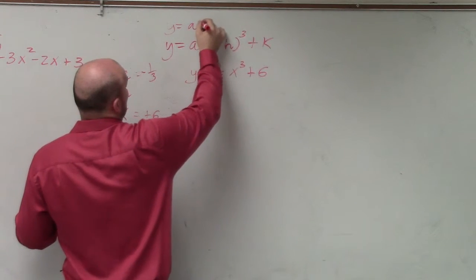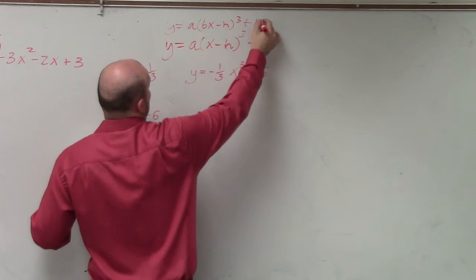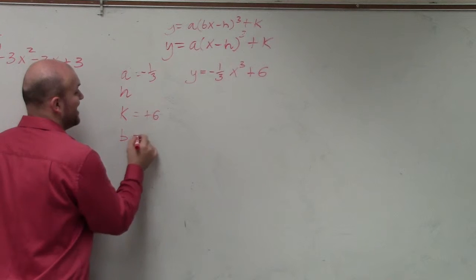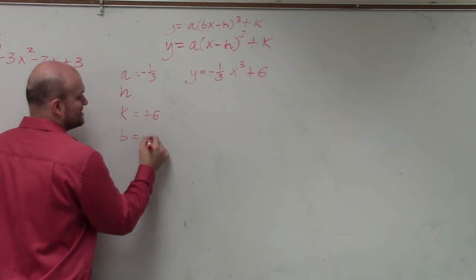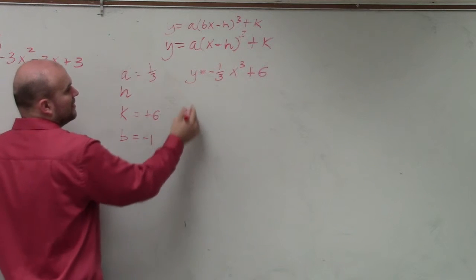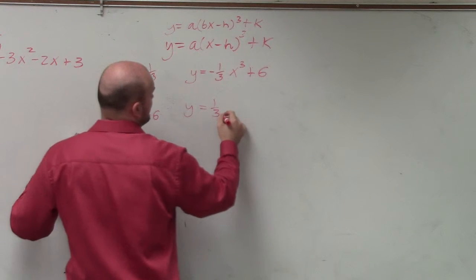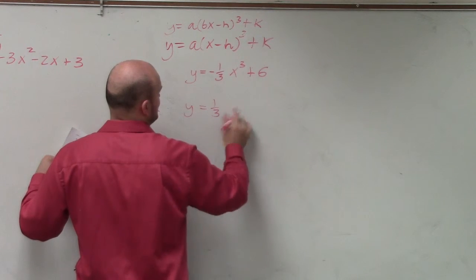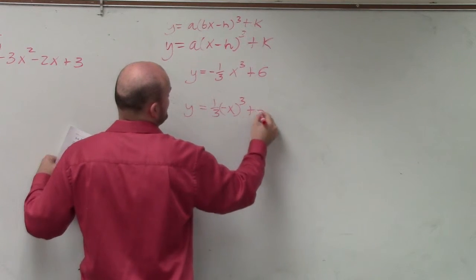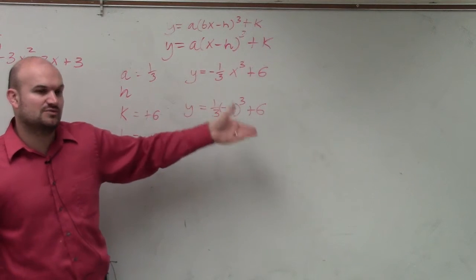Y equals a times bx minus h cubed plus k. So in this problem, if you have a reflection about the y-axis, b is going to be negative one. So the actual problem for this one, it's still going to be one-third, but it's positive, x, I'm sorry, minus x cubed plus six.